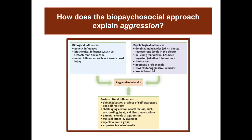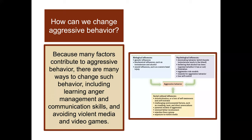The biopsychosocial model applies to aggressive behavior. Biological influences include genetic, biochemical (such as testosterone and alcohol), and neural influences (such as severe head injury). Psychological influences include dominating behavior that boosts testosterone, believing alcohol has been ingested, frustration, aggressive role models, rewards for aggressive behavior, and low self-control. Sociocultural influences include de-individuation, challenging environmental factors like crowding and heat, parental models of aggression, minimal father involvement, rejection from a group, and exposure to violent media.